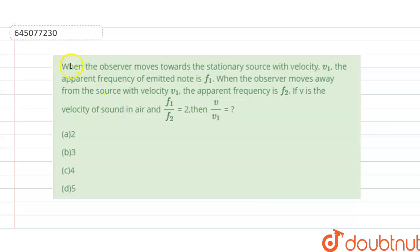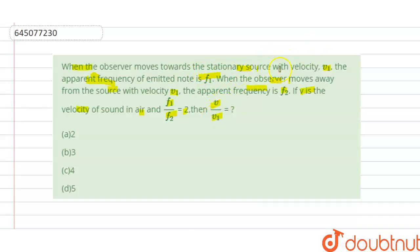Hello students. Today our question is: when the observer moves towards the stationary source with velocity v1, the apparent frequency of the emitted sound is f1, and when the observer moves away from the source with velocity v1, the apparent frequency is f2. If v is the velocity of sound in air, we have to find f1 divided by f2.